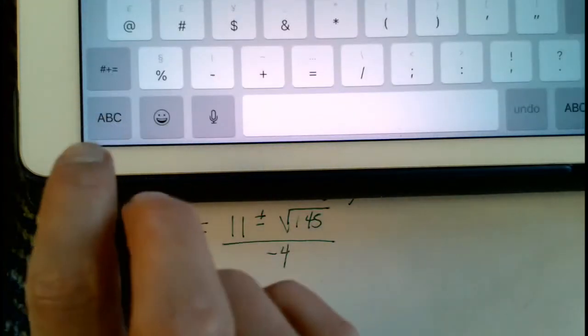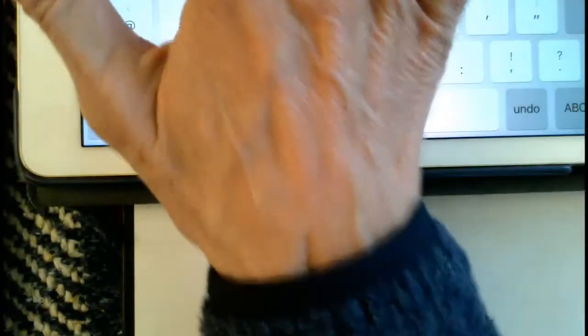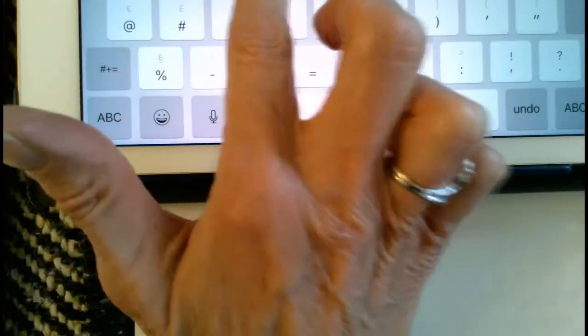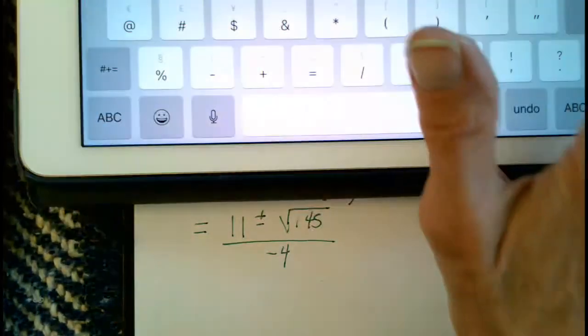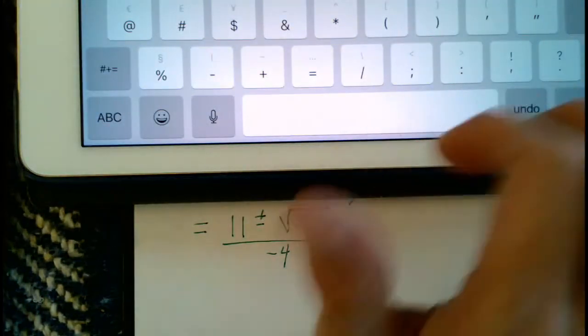we're going to fill in 11. Got to get rid of that m here, which might be easier said than done for me. And then what we found for n is 145. And then down here for p, we came up with negative 4.